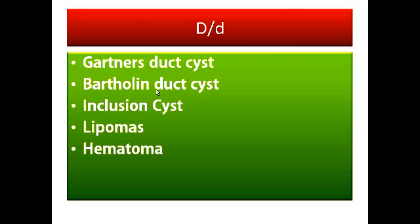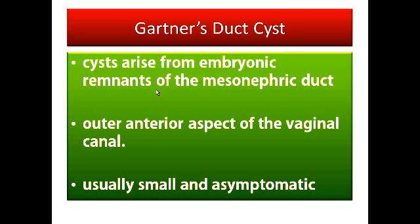Let us begin with Gartner's duct cysts. These are cysts which arise from embryonic remnants of the mesonephric duct, which pass along the entire aspect of the vaginal canal. So these cysts are situated on the anterior vaginal wall. Usually these cysts are small and they are asymptomatic.